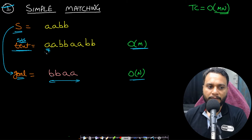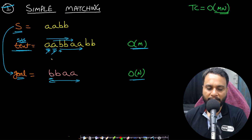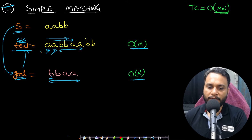Starting the match: 'a' vs 'b' — not matching. In the worst case, we do order-of-n matches per starting position before failing. Moving forward, eventually 'b' matches 'b' and all four characters match. We found the goal substring in the text, confirming that s can be converted to goal after certain left shift operations, so we return true.